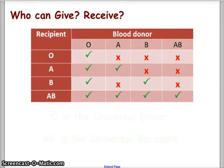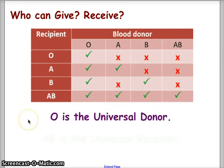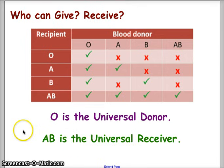As an AB person, I can actually receive from all blood types — O, A, B, or AB — but I can only donate to another AB person. O type blood is called the universal donor because it can be given to everyone, and AB is the universal receiver because AB blood can receive blood from everyone.